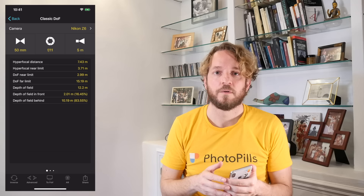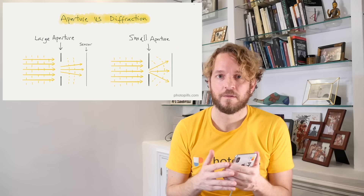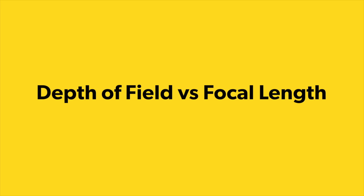There is one limitation: diffraction. Diffraction is the result of light dispersion caused by the edges of the diaphragm blades in the lens. Due to diffraction, the image will look more softened, less sharp, with less detail. So be careful — don't close the aperture too much.